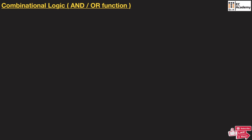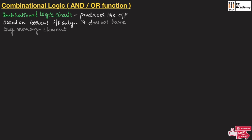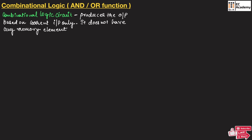First, we need to understand what is a combinational logic circuit. The combinational logic circuit produces the output based on current input only. It doesn't have any memory element, so memory element is not present in combinational logic circuits. To build the combinational logic circuit, we use NMOS and PMOS which will be acting like a switch.